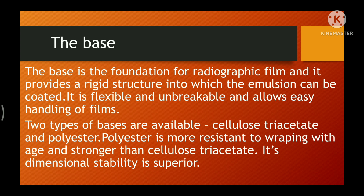Polyester is preferred because it is more resistant to warping — it cannot be folded up easily with age — and it is stronger than cellulose triacetate. It has superior dimensional stability, meaning the ability to maintain its original dimensions when subject to varying degrees of temperature, moisture, pressure, and other stresses. The base has a thickness of 0.18 mm. The function of the film base is to support the emulsion layer and to transmit light.